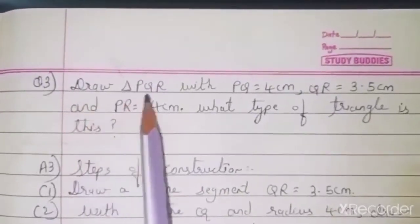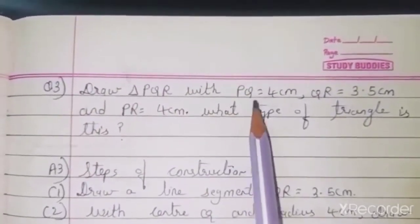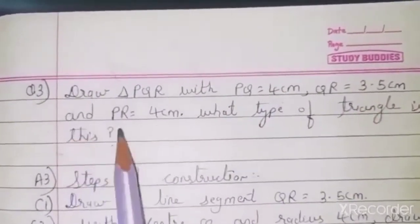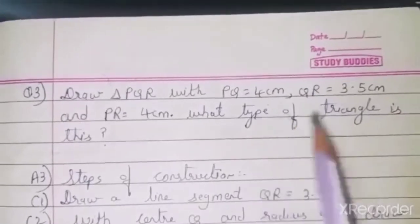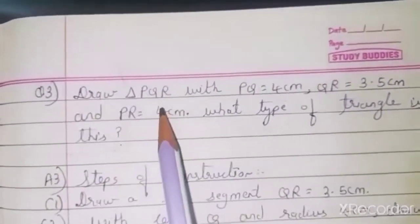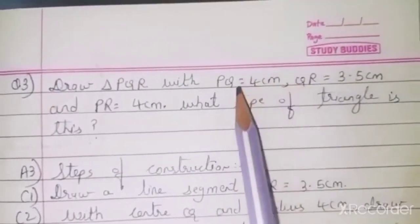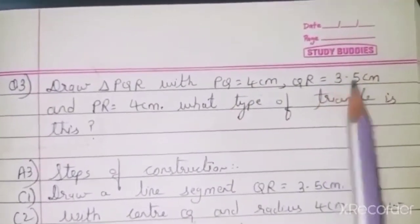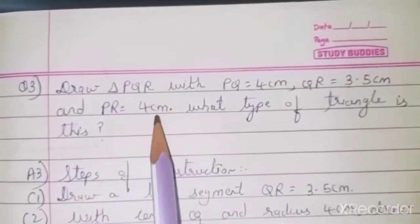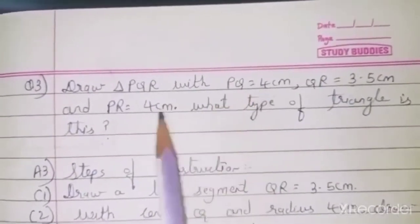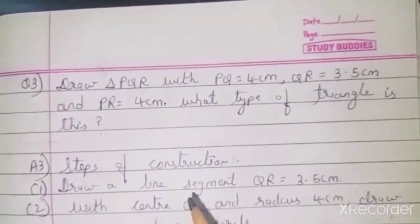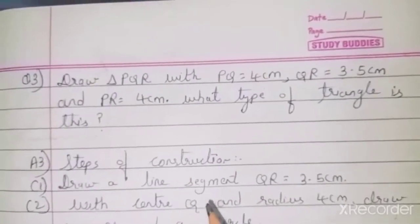Question 3: Draw triangle PQR where PQ = 4 cm, QR = 3.5 cm, and PR = 4 cm. What type of triangle is this? Notice that two sides are equal. When two sides of a triangle are equal, it is called an isosceles triangle.